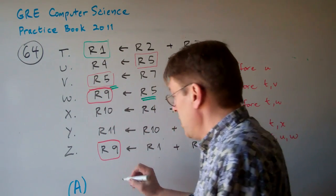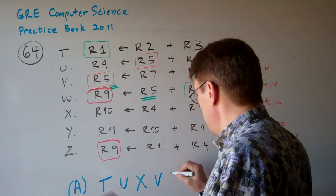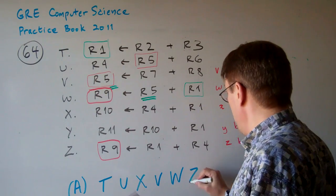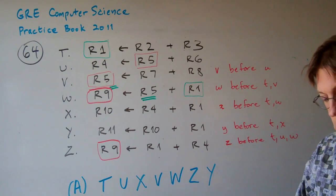And the solution was T, U, X, V, W, Z, Y. That is an acceptable sequence.